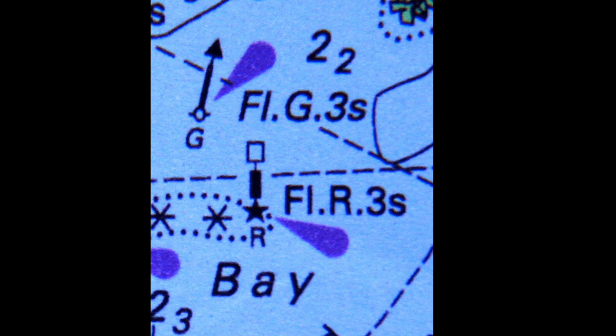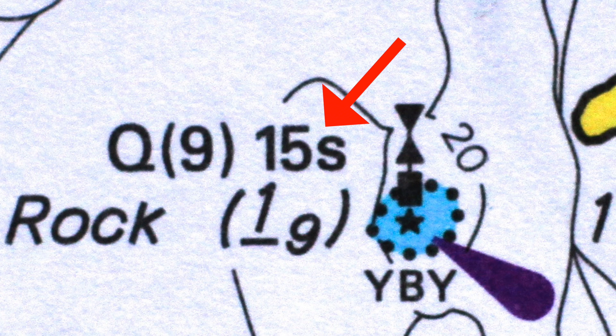The next letter in the code is the colour of the light: R for Red, G for Green, Y for Yellow. The period in seconds follows — for example, 15S means the pattern repeats every fifteen seconds.